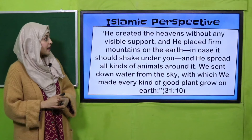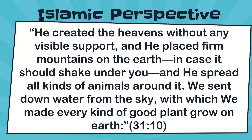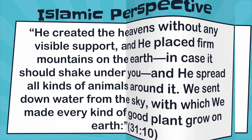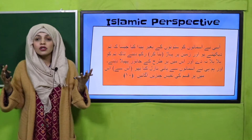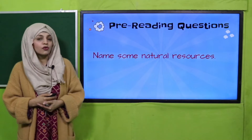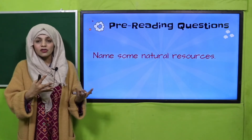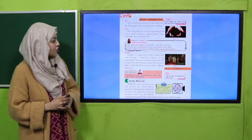Let's quickly look at the Islamic perspective: 'He created the heavens without any visible support and he placed firm mountains on the earth in case it should shake under you, and he spread all kinds of animals around it. We send down water from the sky with which we made every kind of good plant grow on earth.' So my dear students, Allah Ta'ala in the Quran is asking us questions. Quickly name some natural resources — like air, water, sunlight — these all are natural resources.